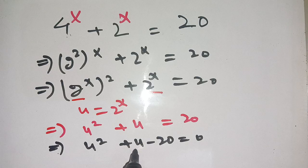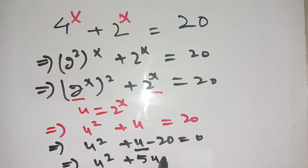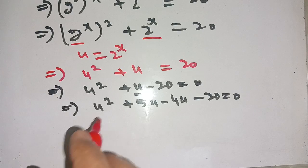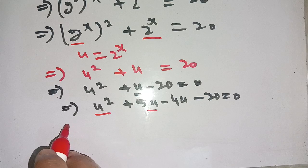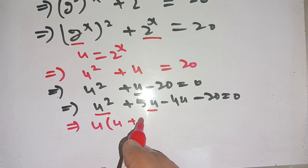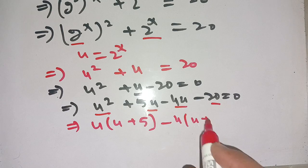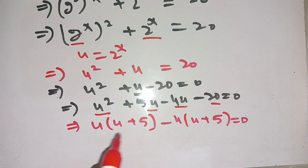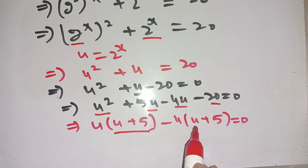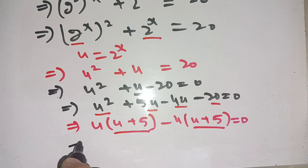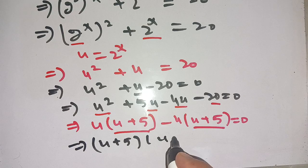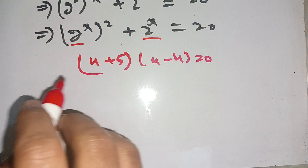Now we break the middle term: u² + 5u - 4u - 20 = 0. In the next step we take out u from the first two terms to get u(u + 5), then take out -4 from the remaining terms to get -4(u + 5) = 0. Taking out (u + 5) common, we get (u + 5)(u - 4) = 0.